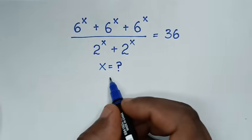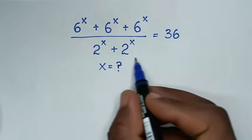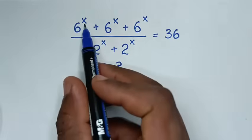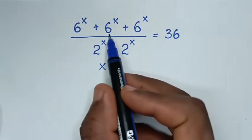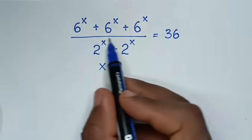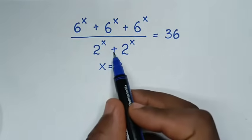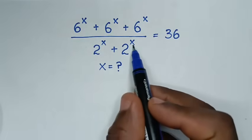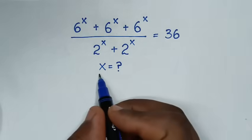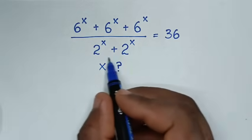Hello, you are welcome to solve this math problem, which is 6 power x plus 6 power x plus 6 power x over 2 power x plus 2 power x is equal to 36, to find the value of x from this equation.